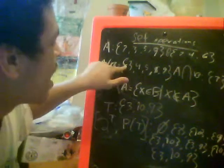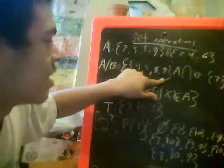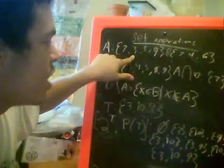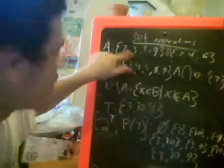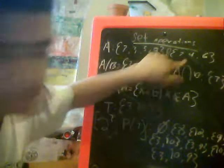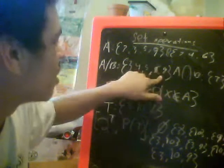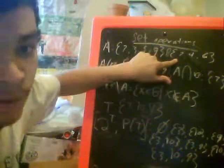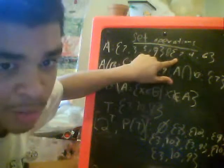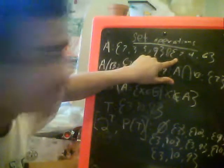So we have 3, 4, 5, 6, and 9 because 3 appears in just set A. 4 appears in just set B, 5 appears in just set A, 6 just B, and 9 just A. Now, 7 appears in both, so it's not part of the complement or the set difference.